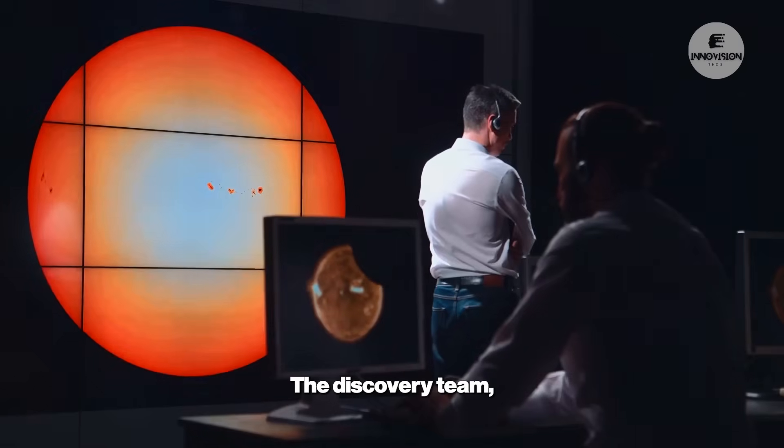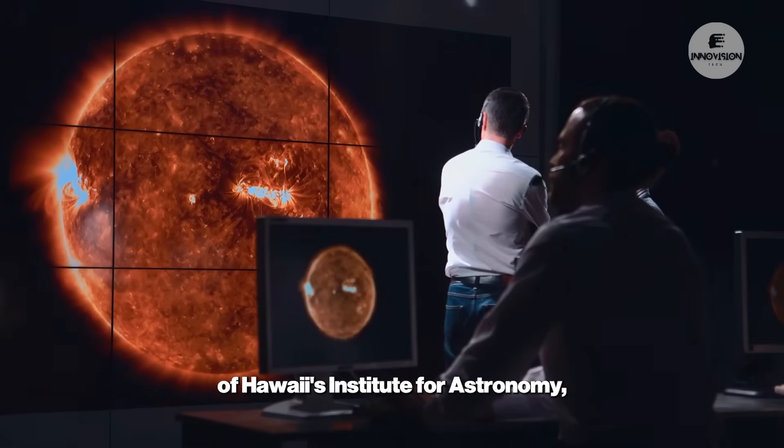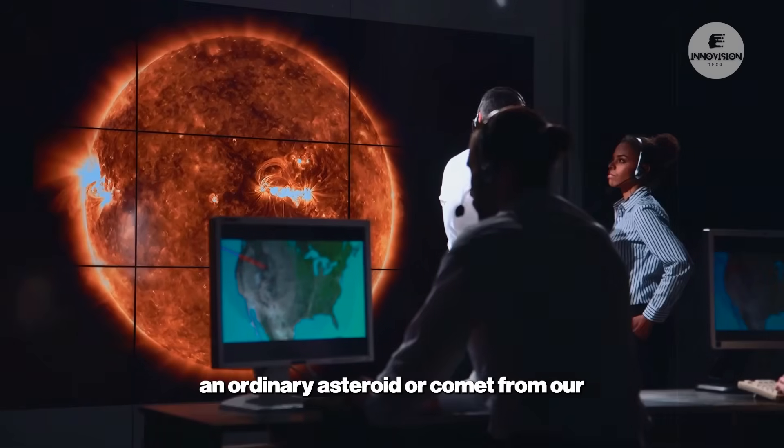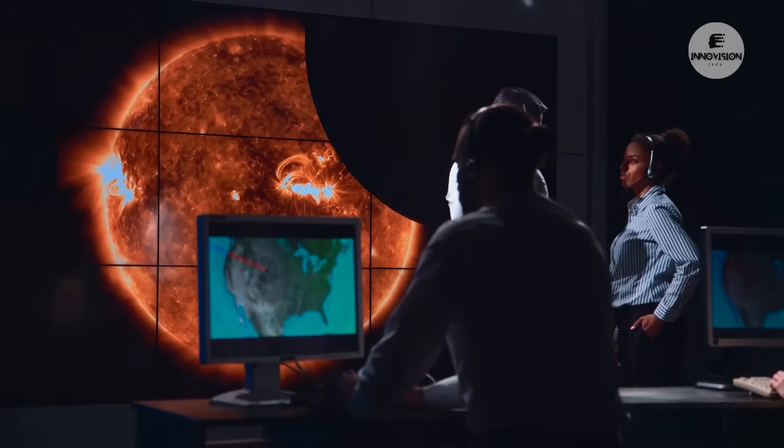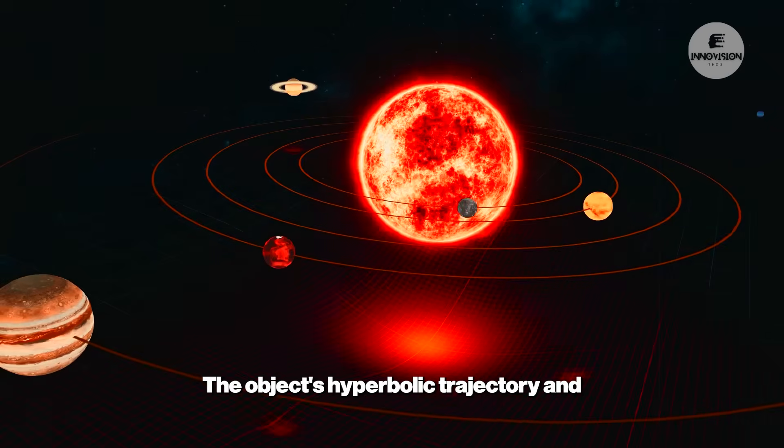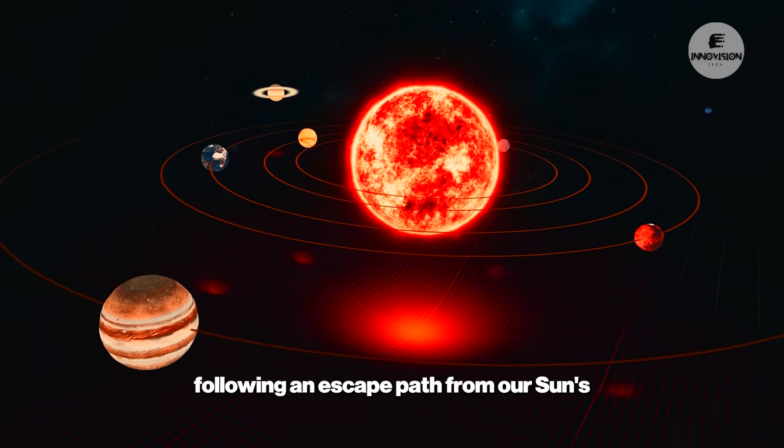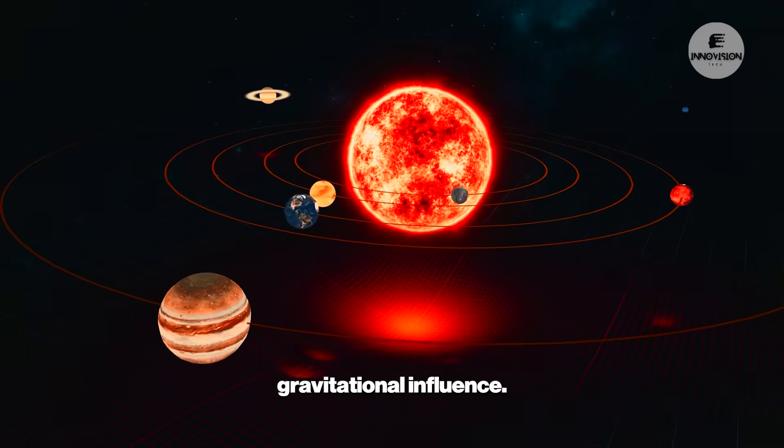The discovery team, led by Larry Deneau from the University of Hawaii's Institute for Astronomy, immediately recognized that this wasn't an ordinary asteroid or comet from our solar system. The object's hyperbolic trajectory and extreme velocity indicated it was following an escape path from our sun's gravitational influence.